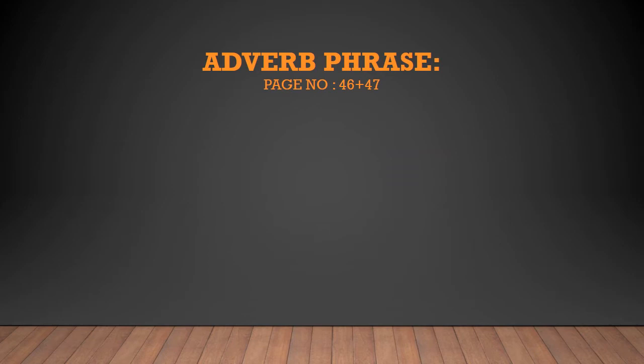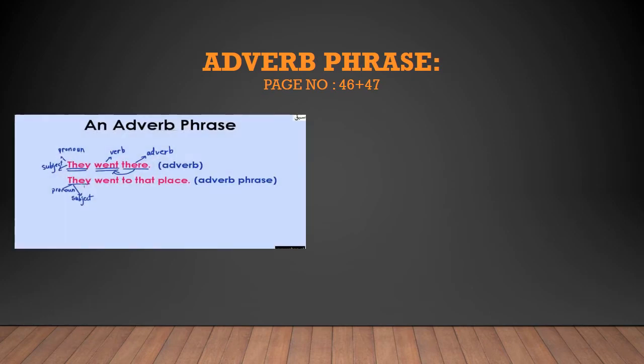Adverb phrase. After doing the adverb exercise, it is the turn of adverb phrase, on page number 46 and 47. What is an adverb phrase? First, do you know what is a phrase? A phrase is a group of words that doesn't have a complete meaning or complete thought. A group of words where you don't get a complete meaning — we call it a phrase. A sentence gives you a complete meaning and complete sense, but a phrase does not.